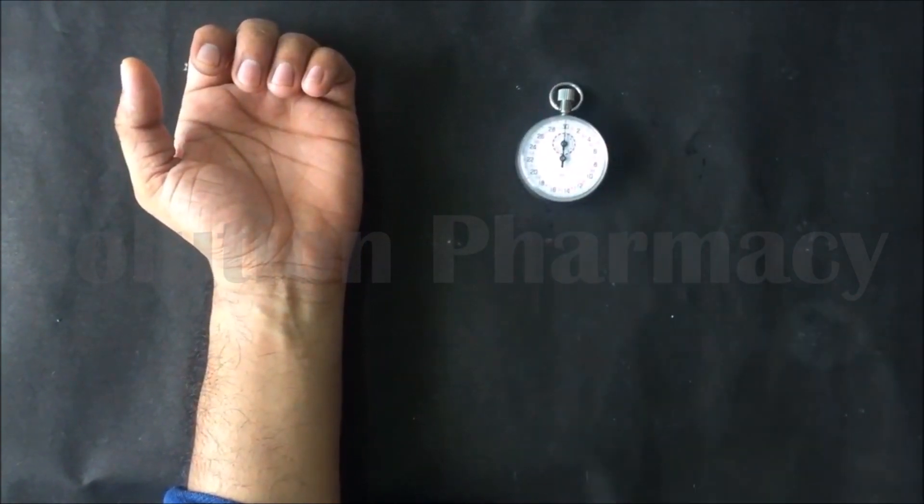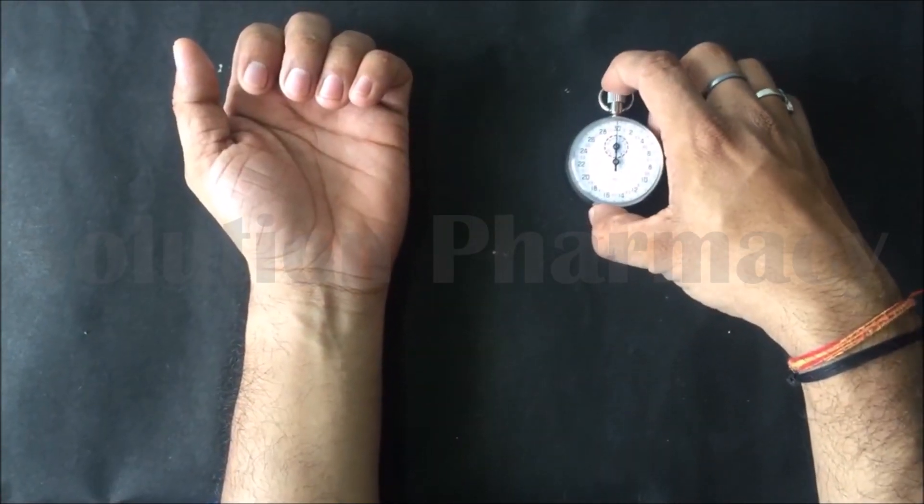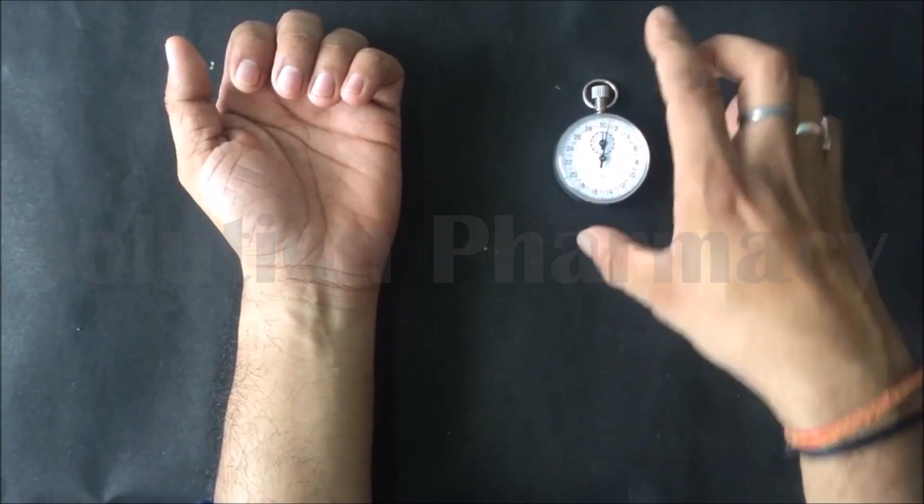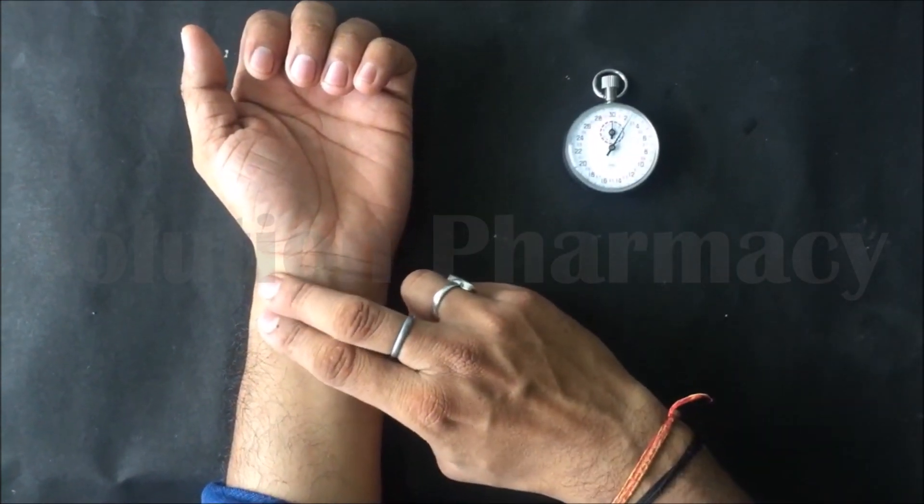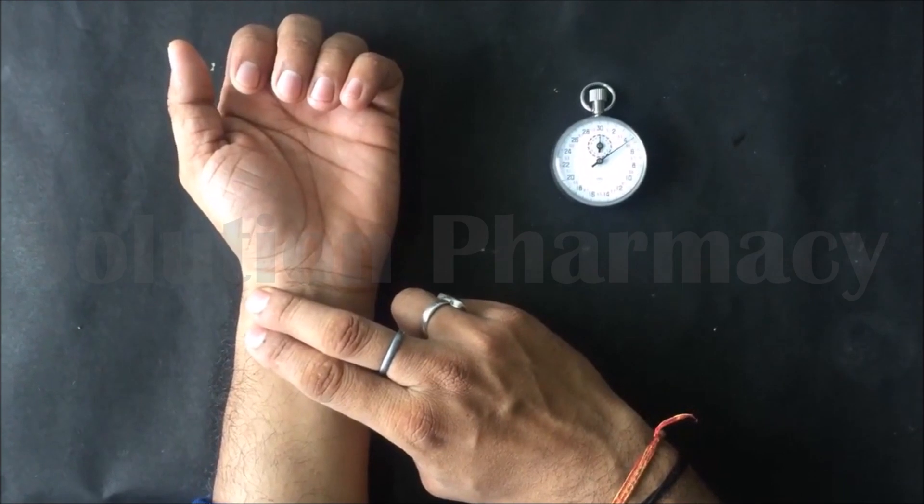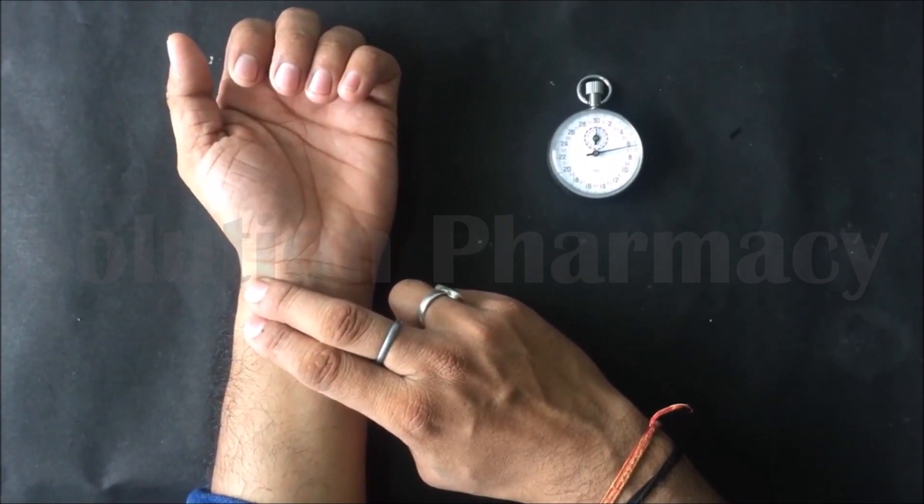Then count the number of beats you feel. Count the number of pulses. You can count the pulse for 10 seconds, or for 20 seconds, or for 60 seconds (one minute).